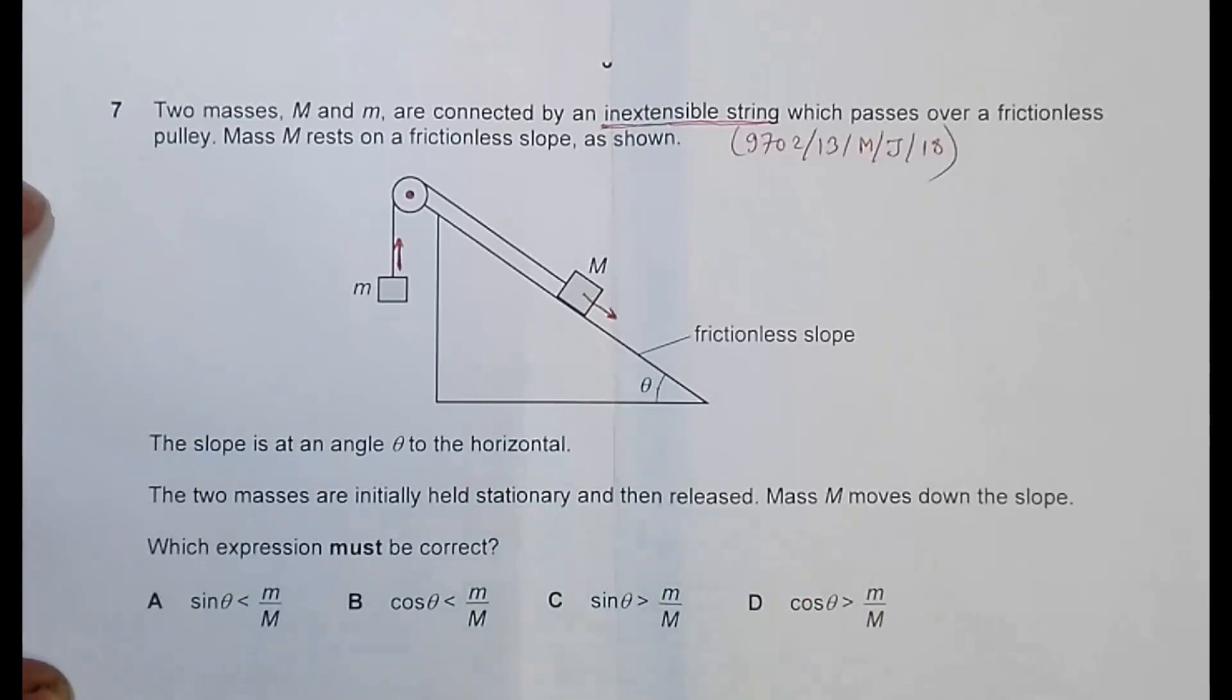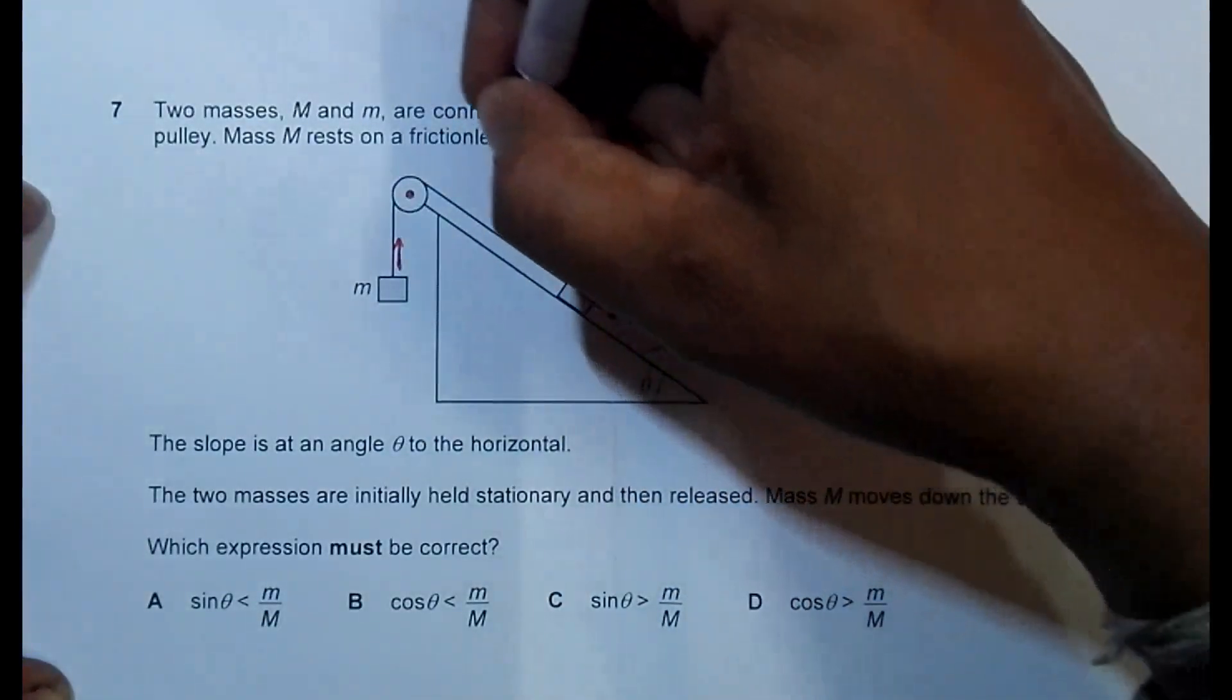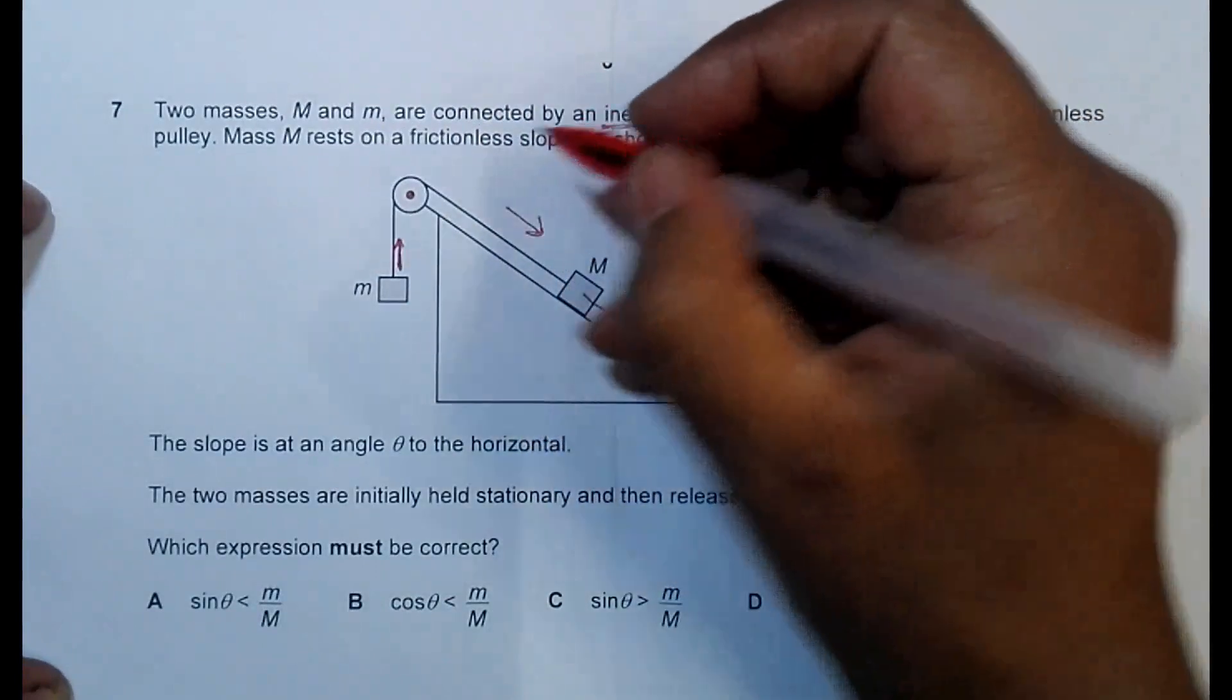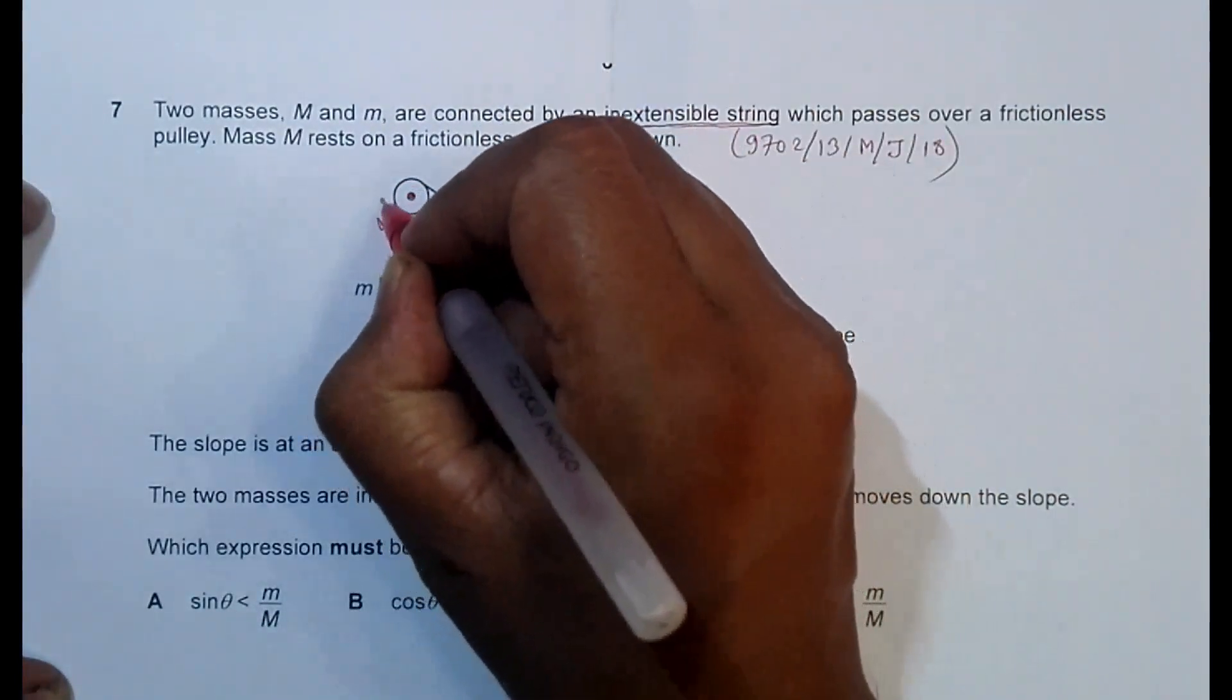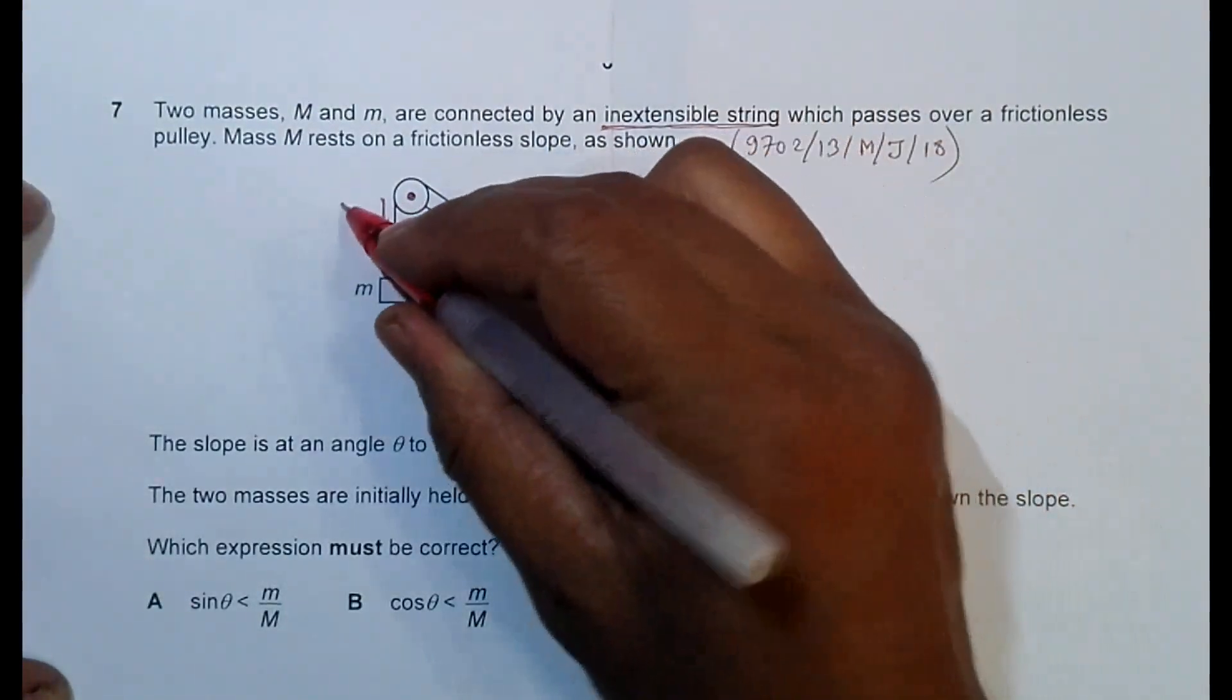So if it so happens, what we must have is the force here should be greater than this force. If it is moving here, it is accelerating from rest. So this force should be more than this force.